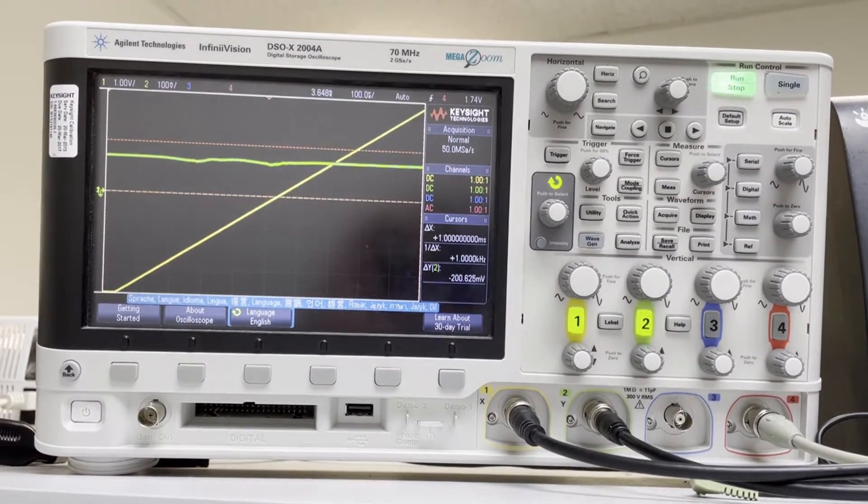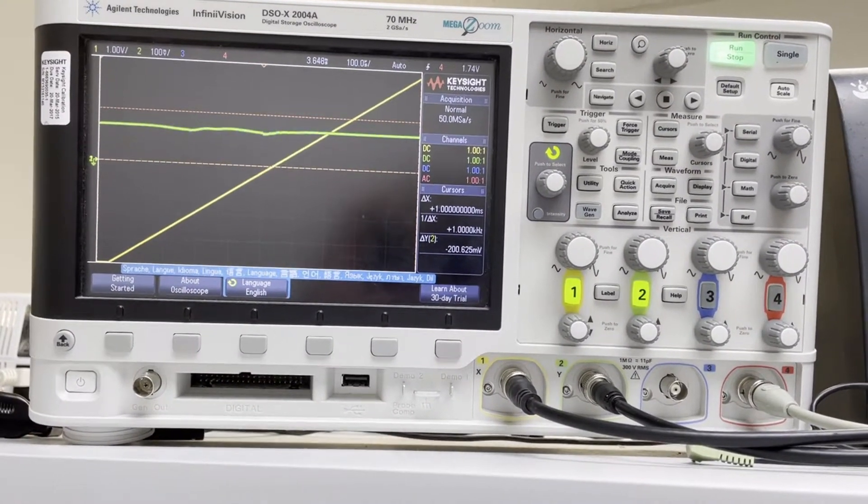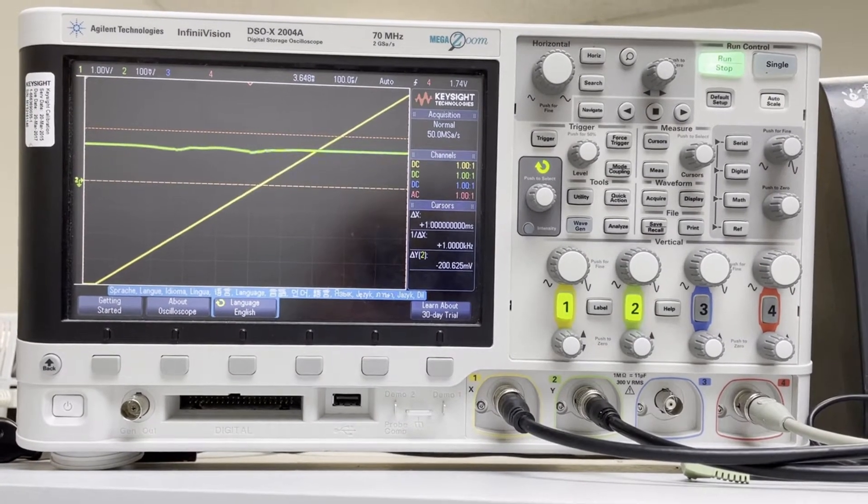Once that's the case, we'll have this flat featureless line, which is just a good starting point for optimizing the system. You don't actually have to do this step, but I recommend it if you're new to this.